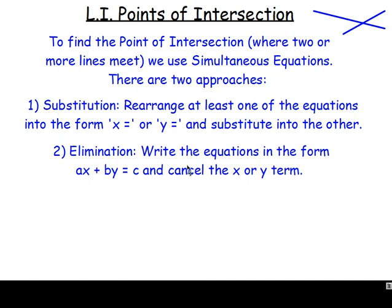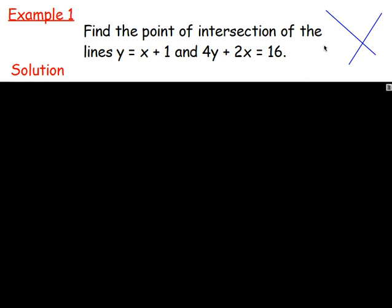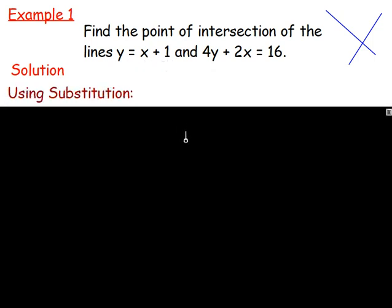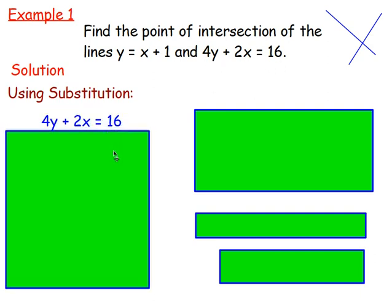Example one: find the point of intersection of the lines y equals x plus 1 and 4y plus 2x equals 16. You've got two straight lines — one with equation y equals x add 1 and the other 4y add 2x equals 16 — and you want to find the point they meet. The first equation is already in the form y equals, so you can use the substitution method. Take the other equation, 4y add 2x equals 16.